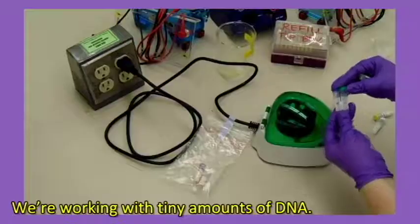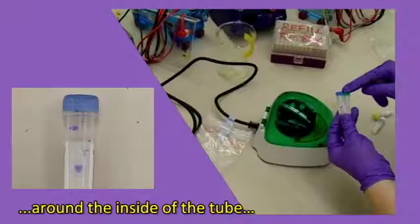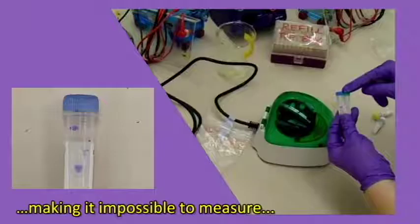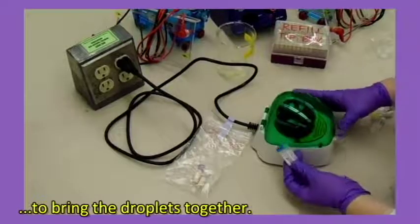We're working with tiny amounts of DNA. Sometimes the drop will be splattered around the inside of the tube, making it impossible to measure accurately with the micropipette. We use the microcentrifuge to bring the droplets together.